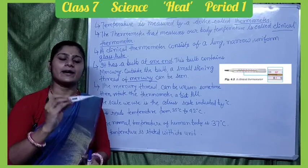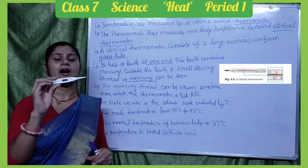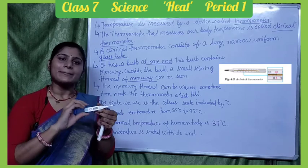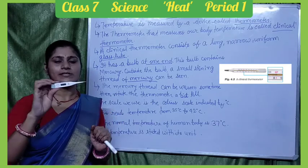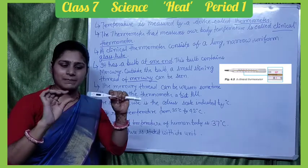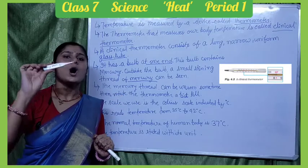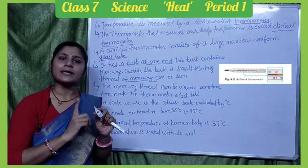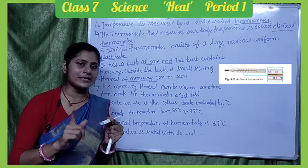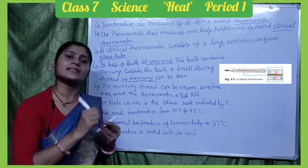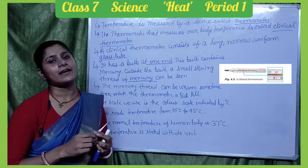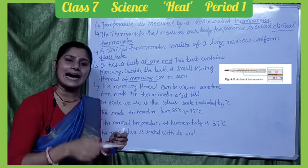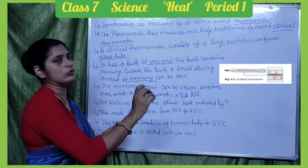We have a digital thermometer as well. Clinical thermometers are made of glass, so handle them carefully. When our temperature is lower, a normal reading is 37 degrees Celsius. If the mercury is above that level, we first shake the thermometer to lower it below 35 degrees Celsius.